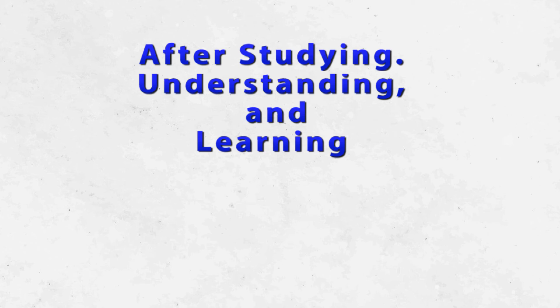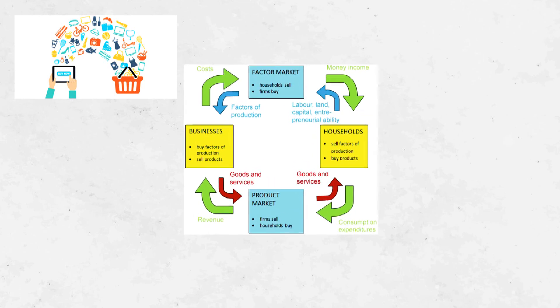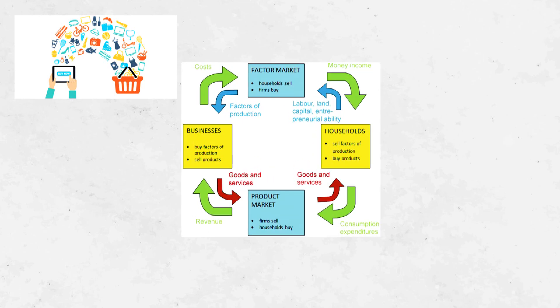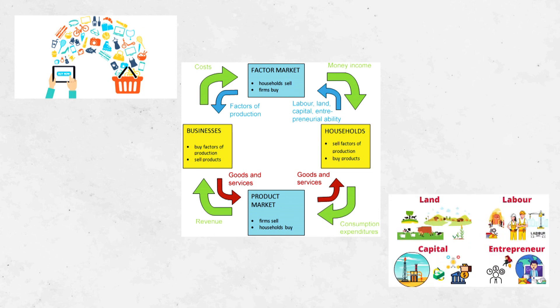After studying and understanding this course, you will be able to understand how consumers make decisions to maximize their satisfaction, how productive resources are allocated for various goods and services, how markets fail and what is the role of government in responding to those failures, and how firms can determine the profit-maximizing level of output in different types of markets. We look forward to having you in this course of Microeconomics. Thank you.